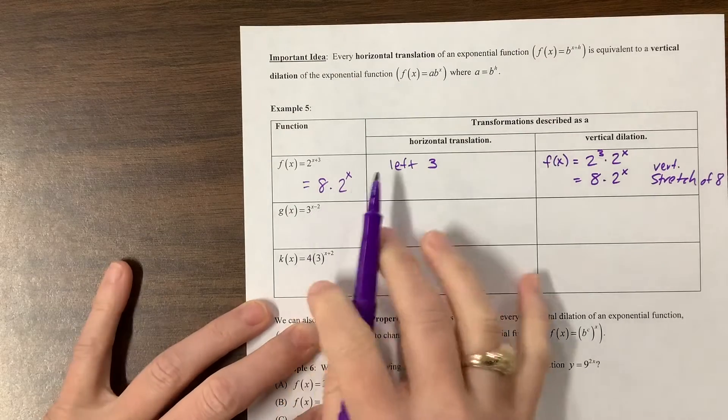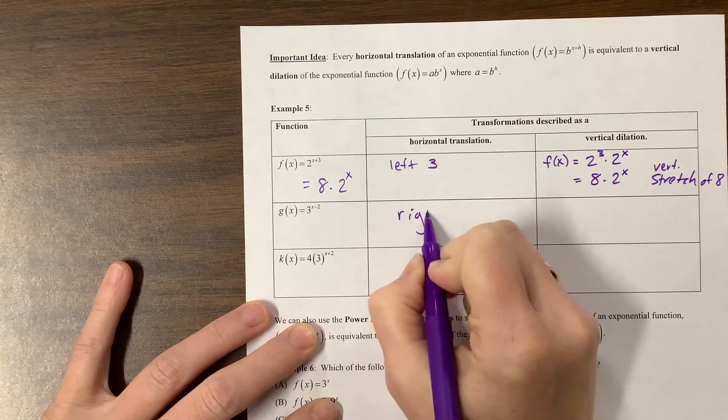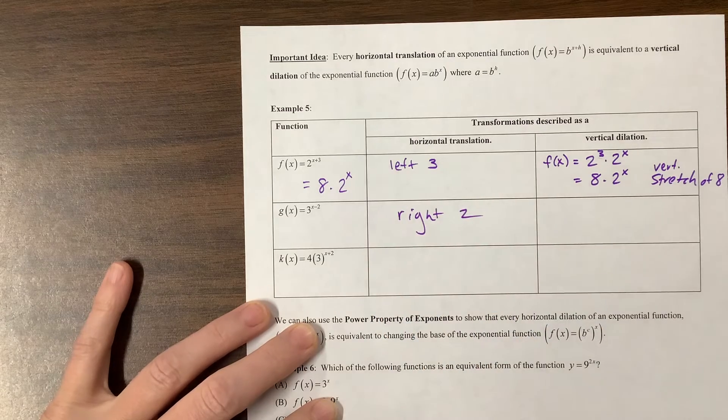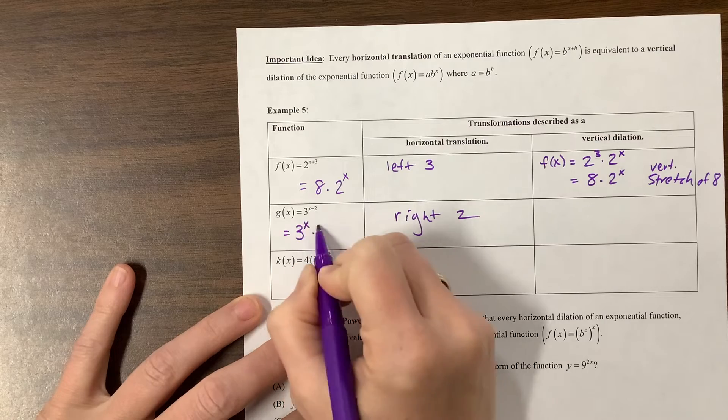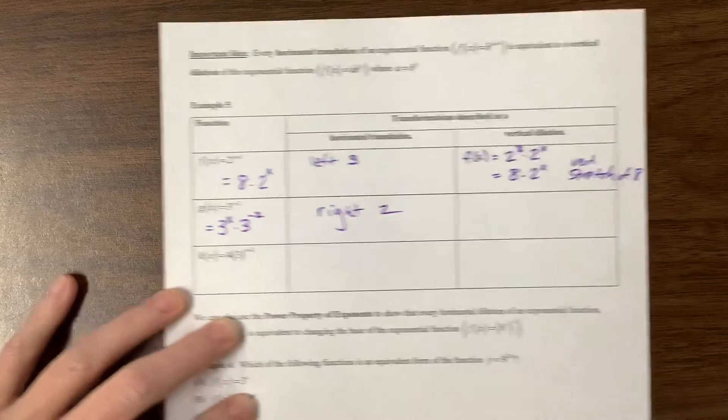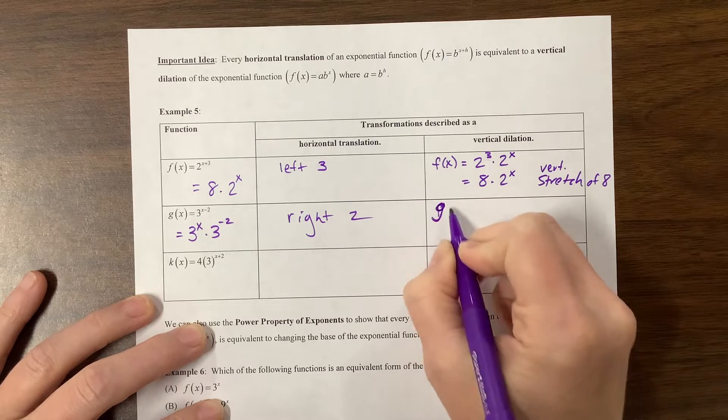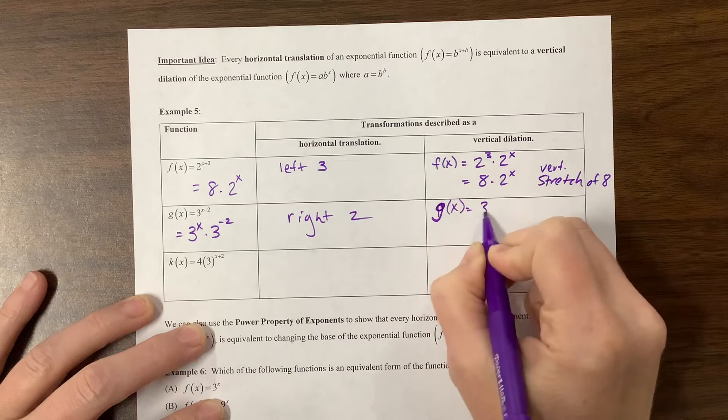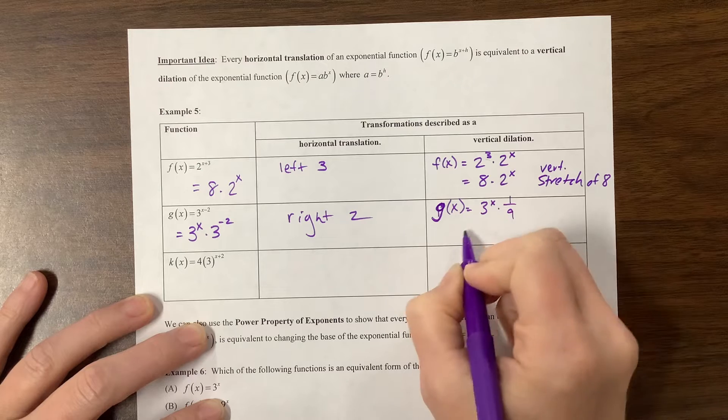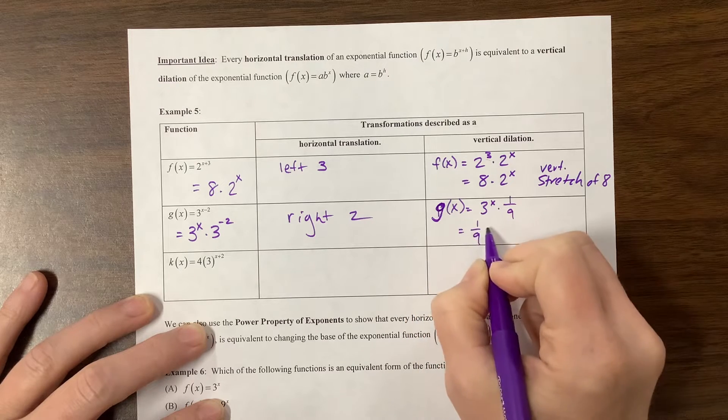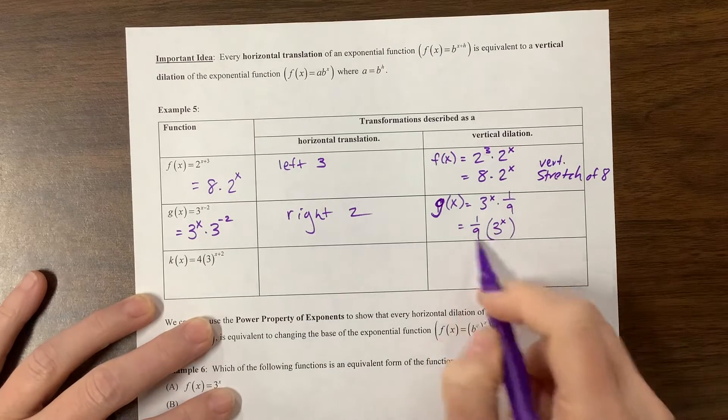This one here, what are we doing? Well, we're shifting this one to the right two units. Okay, well, what does that mean? That means this is 3^x times 3^(-2). 3^(-2), I ran out of space. This is our g(x), sorry, I switched letters. g(x) is equal to 3^x times, well, 3^(-2) is 1 over 9. Okay, so this is 1/9 times 3^x, or however you want to write that with dots or parentheses, but basically this is multiplying by this.